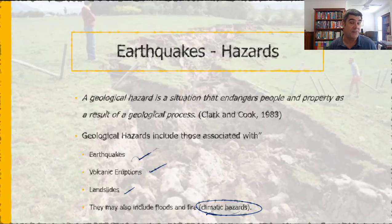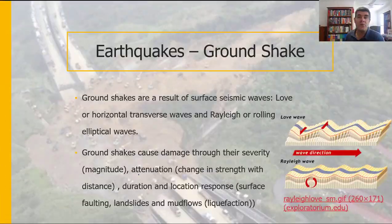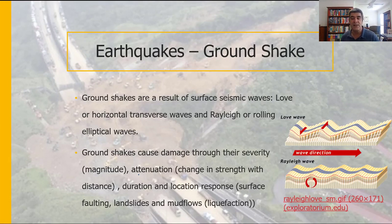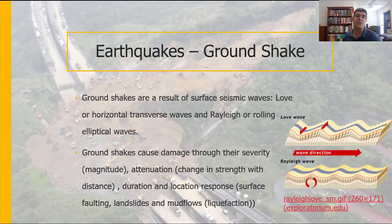So let's have a look at the first of these — earthquakes. Earthquakes are going to be split into two main types of hazards: ground shakes and also tsunamis. These are two very important and potentially serious consequences of earthquakes and the damage that they can cause.